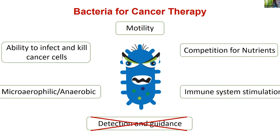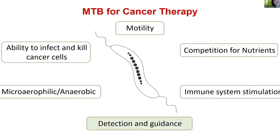Moreover, most bacteria are motile — they have flagella so they can swim and go deep into tumoral tissues. Most importantly, anaerobic or micro-aerophilic strains are investigated for this because tumors have a strange vasculature with low oxygen concentration, so these bacteria are attracted specifically to tumoral areas. But a major drawback was that we couldn't detect them inside the body or guide them to the desired area.